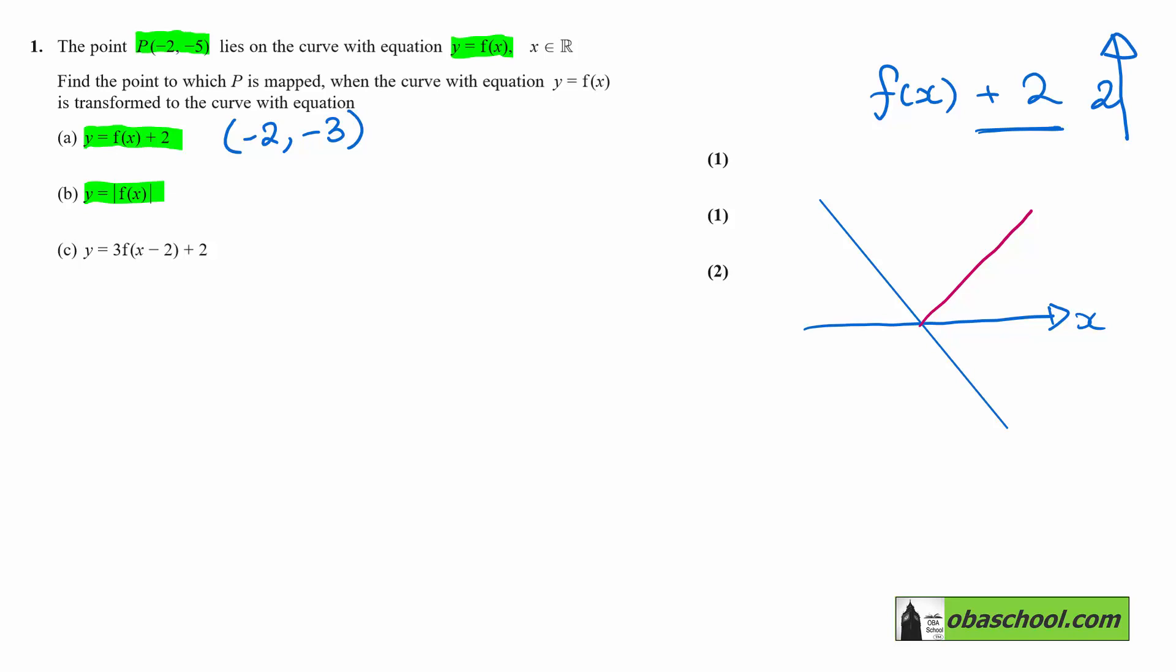That means a point like (-2, -5), which is below the axis, would be reflected in the x-axis. Once again, the x-coordinate wouldn't change, but the y-coordinate would become positive.